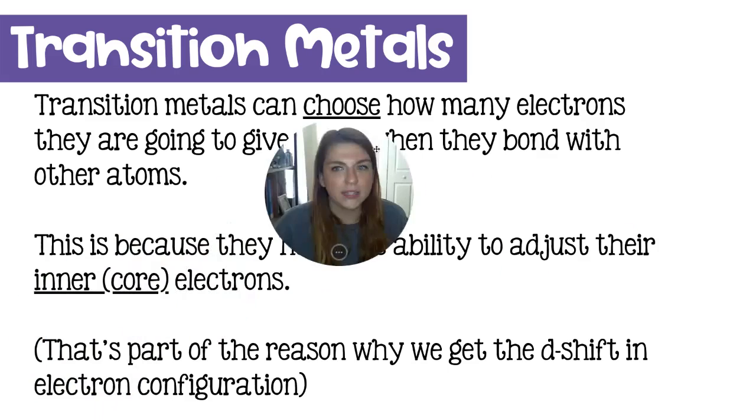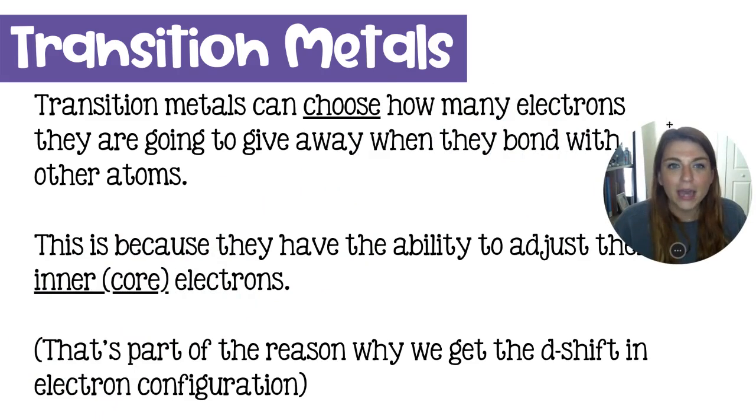Now, what's weird about the transition metals and how they act is that they kind of choose how many electrons they are going to give away when they bond. They're metals, so they always give away electrons. And this is because they have the ability to rearrange or reorganize their interior core electrons so that they can adjust how many are in the valence. And that is where the d-shift comes from in our periodic table.